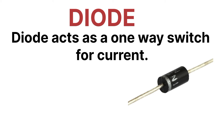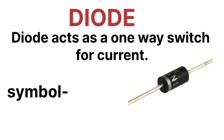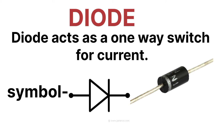Next is diode. A diode is a semiconductor device that essentially acts as a one-way switch for current — it allows current in only one direction. Here you can see in the image the symbol for a diode.